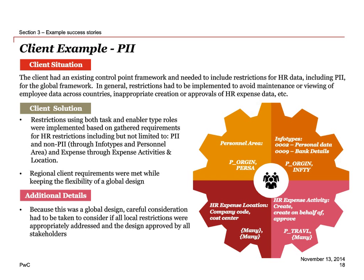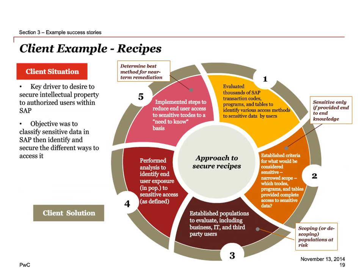The solution used restrictions on both task and enabler-type roles, implemented based on guided requirements — some direct PII requirements, and some non-PII items like info types and personnel area. We don't typically see those objects and fields used to restrict PII, but based on requirements we were able to pull in standard SAP objects and fields to protect the information. Because this was a global design, we had to consider whether all local restrictions were appropriately addressed while having the design approved by all global stakeholders — a joint effort to find the right balance between local restrictions and global design.